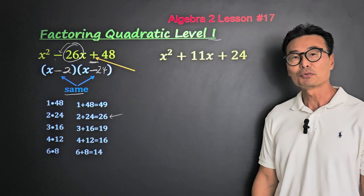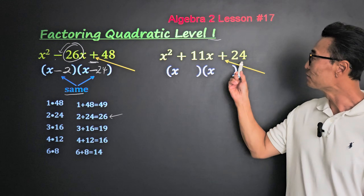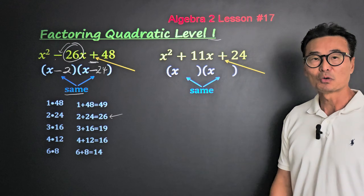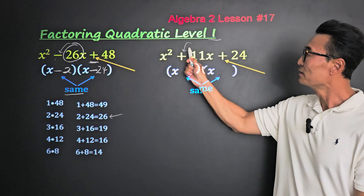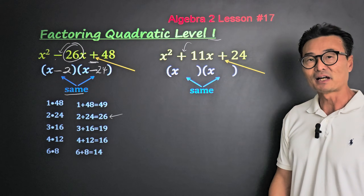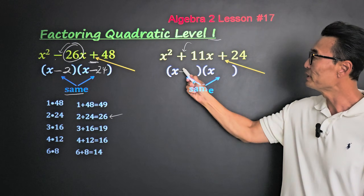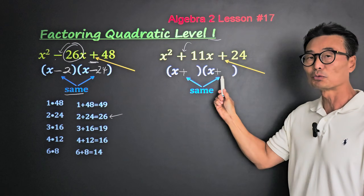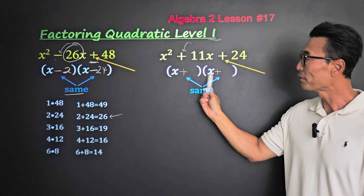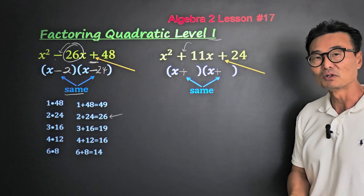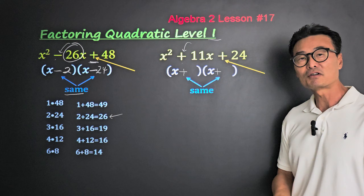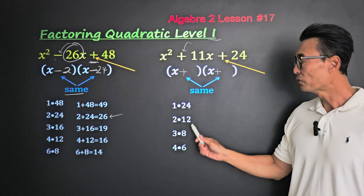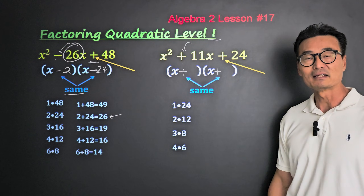In our second example, notice that the sign in front of 24 is once again positive, which means the signs will be the same. However, because the b value is positive, the signs will be both positive. We want to find all the pairs of numbers that multiply to 24, which are 1 and 24, 2 and 12, 3 and 8, and 4 and 6.